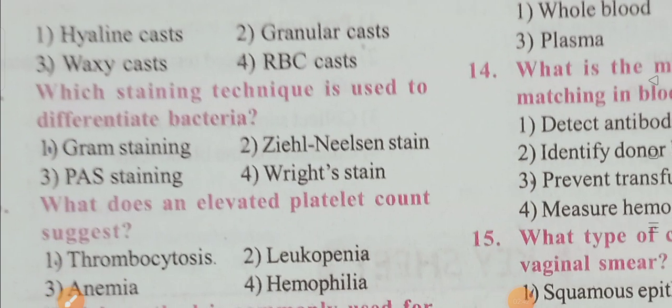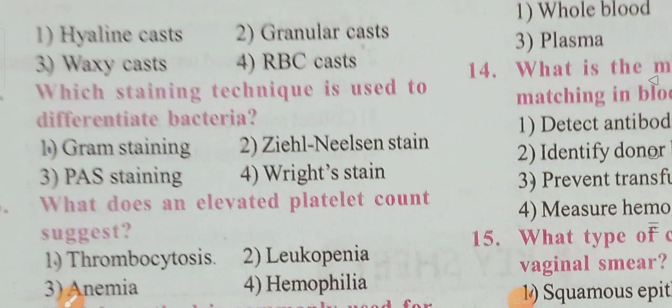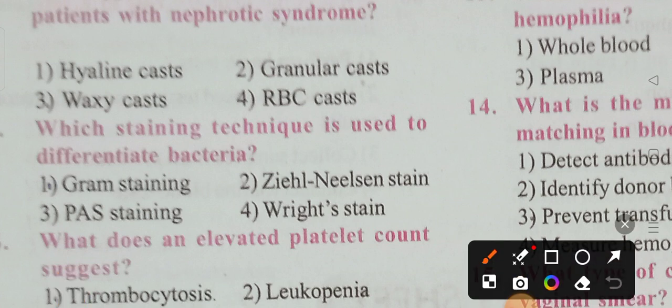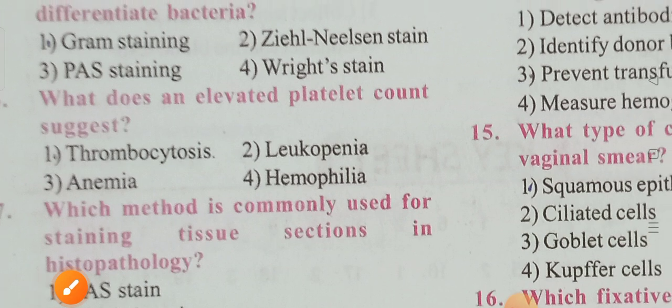Next: which staining technique is used to differentiate bacteria? Options are Gram staining, Ziehl-Neelsen stain, PAS staining, and Wright stain. Option 1 is the correct answer — Gram staining. It helps differentiate bacteria.